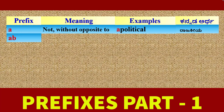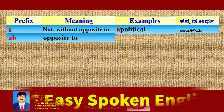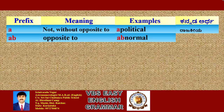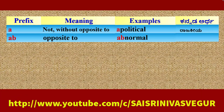Prefix 'Ap': its meaning is 'opposite to'. Example: Abnormal. 'Normal' is a common word; its opposite with the prefix 'Ap' gives 'Abnormal'. Its Kannada meaning is 'Asahaja' — not normal.